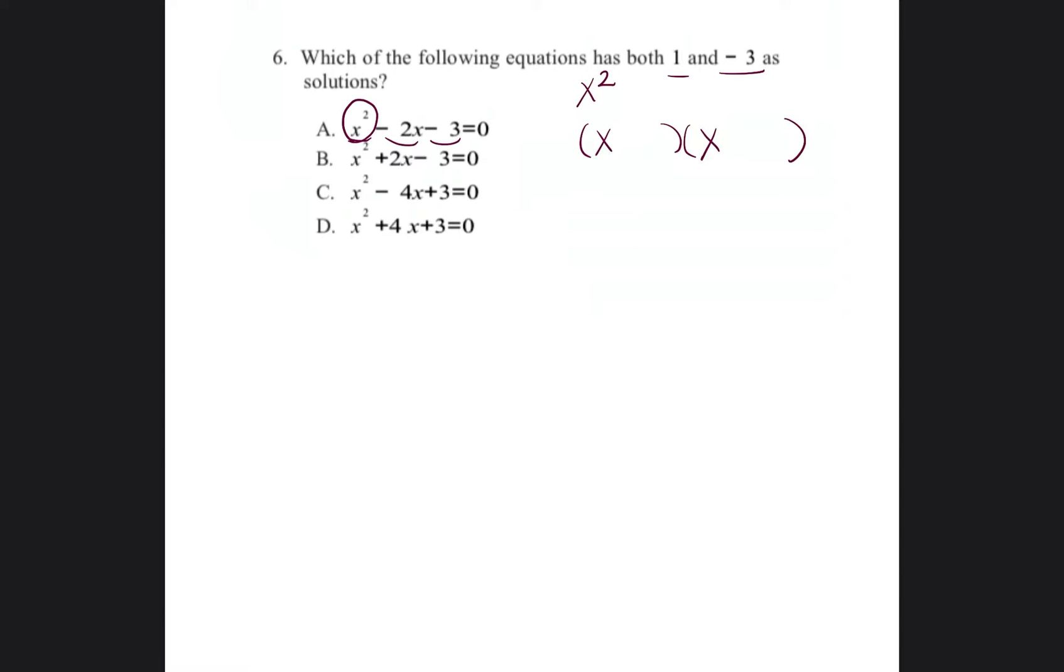Now I'm going to show you a very simple solution to this problem. You know the solutions are 1 and negative 3, so you just write the opposite in the parentheses. So the opposite of positive 1 is negative 1. The opposite of negative 3 is positive 3. So now we know the binomials, and we're just going to multiply them out.